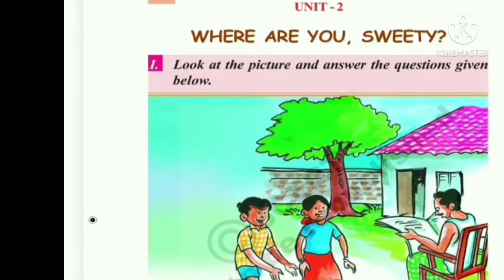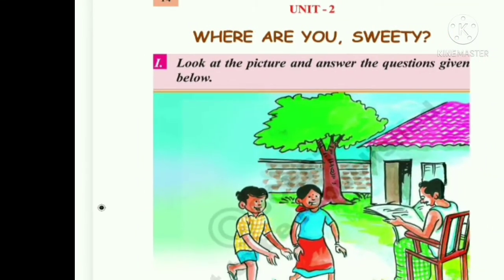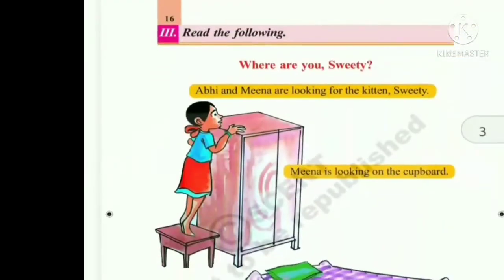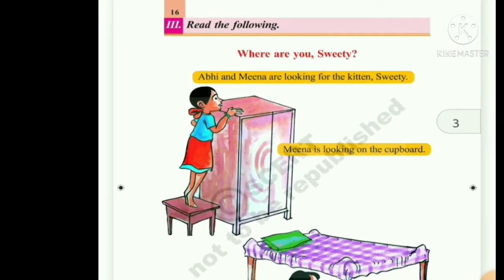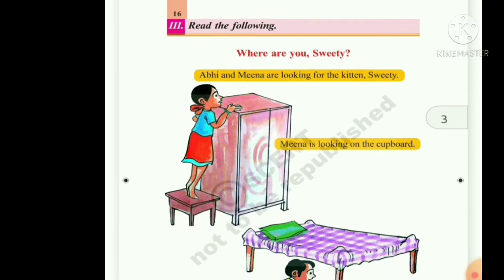Second class, second lesson: Where are you, Sweetie? Abhi and Meena are looking for the kitten, Sweetie. Meena is looking on the cupboard.